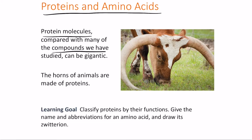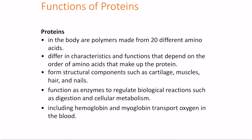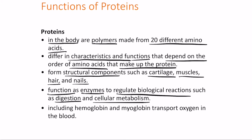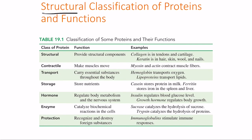Proteins are generally gigantic molecules compared with many compounds we have studied — for example, the horns of animals are made of proteins. Proteins are ubiquitous; they are everywhere in your body. In the body, proteins are polymers made from 20 different amino acids, and they differ in characteristics and functions depending on the order of amino acids that make up the protein.